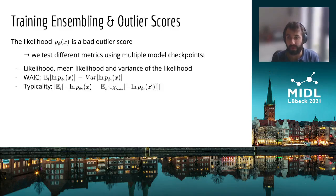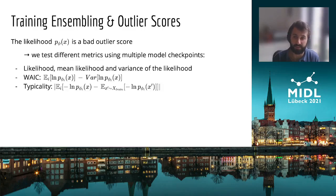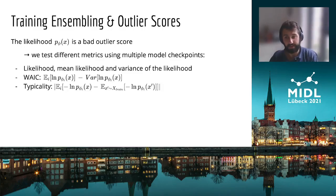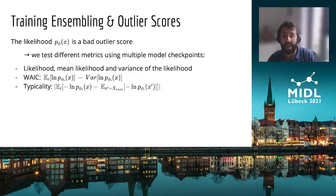Instead, we propose to use different outlier metrics, and we follow work that considers checkpoints along the training trajectory as different models to cut down on compute cost during training. We collect multiple checkpoints of our model and calculate various statistics as potential outlier metrics: namely, the regular likelihood, the expected likelihood over multiple checkpoints, the variance of the likelihood over multiple checkpoints, the Watanabe-Akaike information criterion as introduced by Choi et al., and an adaptation on the typicality test as introduced by Nalisnick et al.